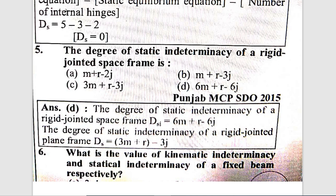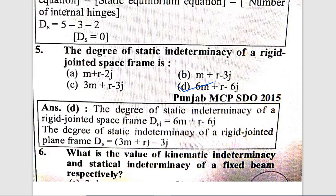For a rigid jointed plane frame, the static indeterminacy formula is 3M + R - 3J, where M is members, R is reactions, and J is the number of joints.